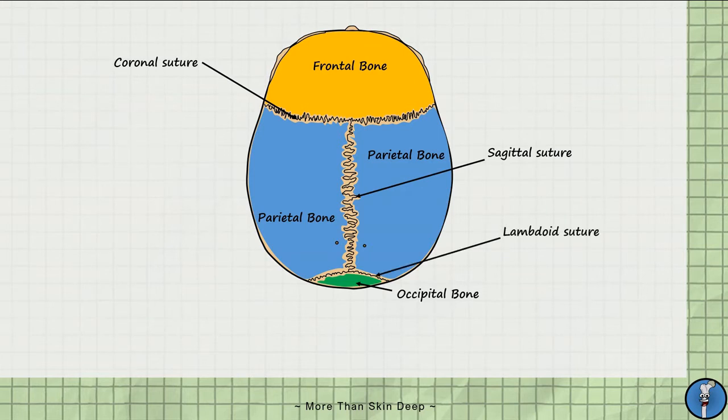The lambdoid suture is named after lambda, the 11th letter in the Greek alphabet, because the sutures mimic the letter's shape.